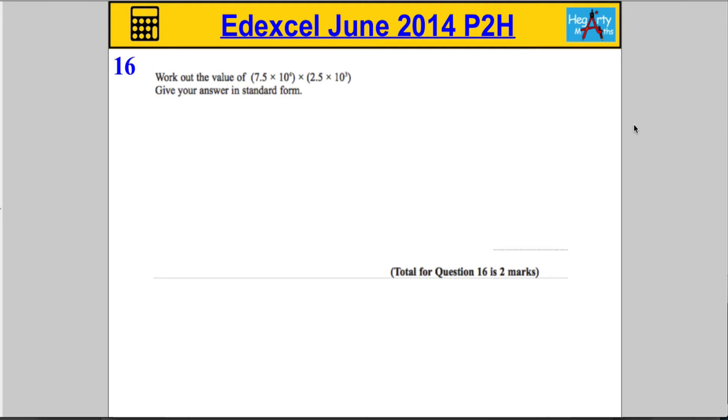Question 16. Work out the value of 7.5 by 10 to the 4 times 2.5 by 10 to the 3 and give your answer in standard form.